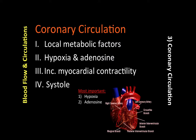Coronary circulation also exhibits active and reactive hyperemia, which we discussed under the examples of local control in the first video. The most important local metabolic factors are hypoxia and adenosine.